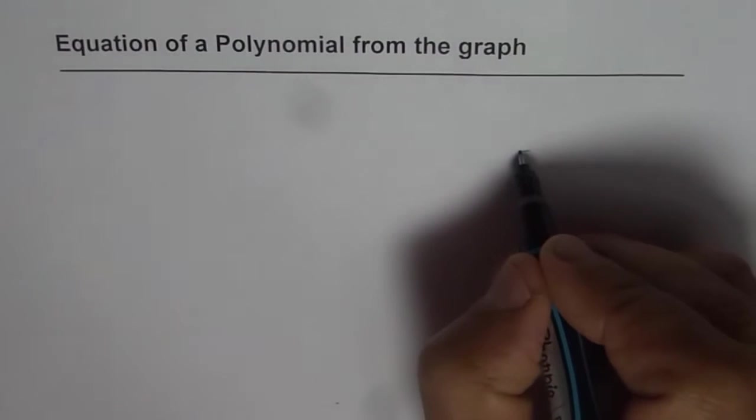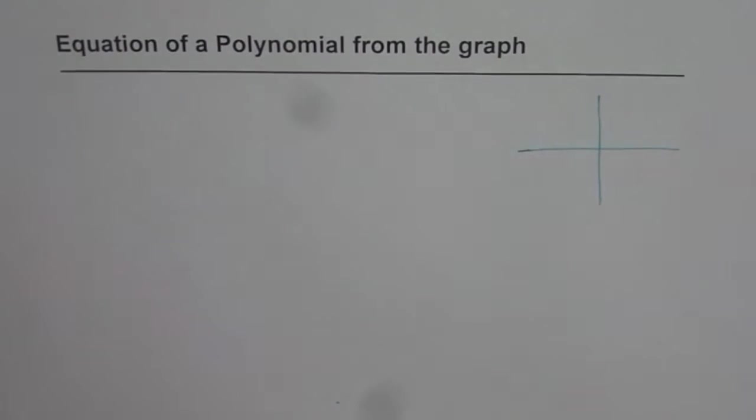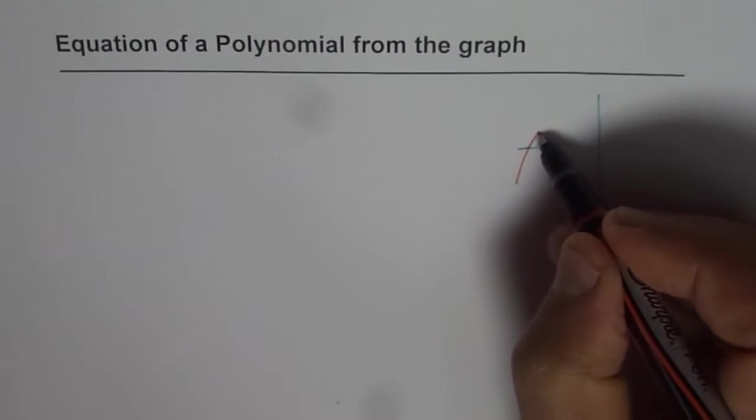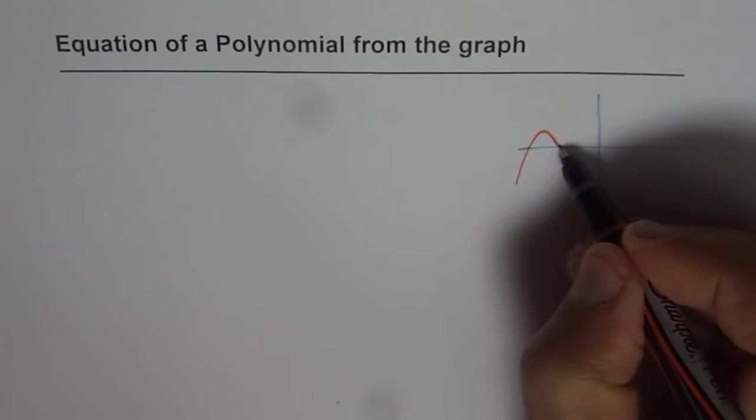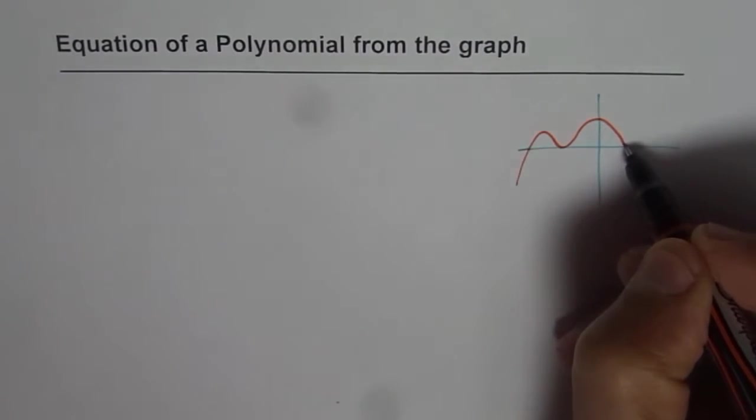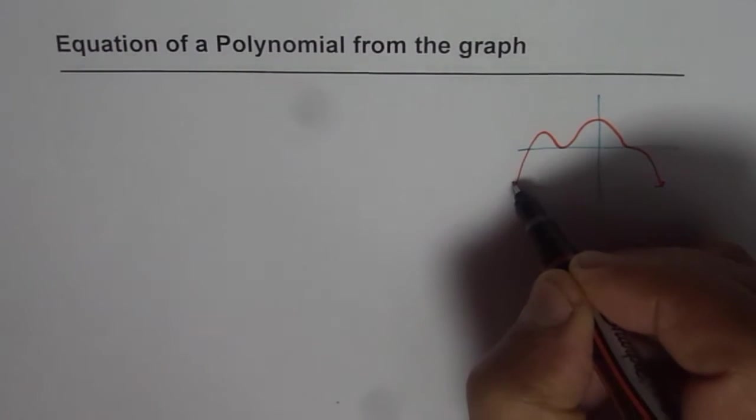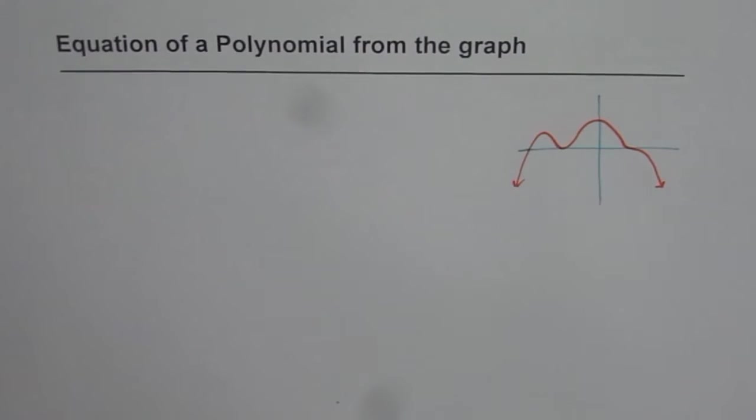To start with, let me sketch a graph here. Let us say that we have a linear zero, a quadratic zero, and let us say this is kind of an odd zero. Let's say that's our graph.